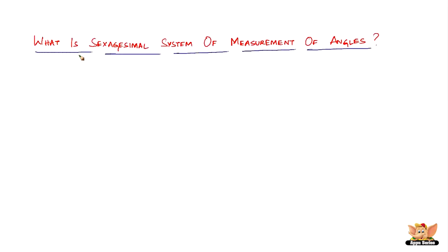In this video, let us look into what is the sexagesimal system of measurement of angles. The sexagesimal system is one of three ways to measure an angle. It is also called the English system. So let us look into what it is.